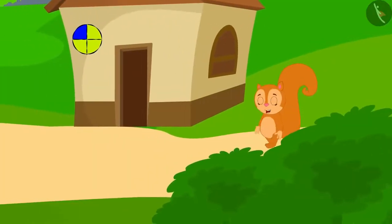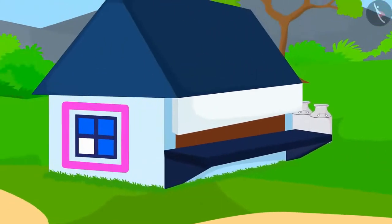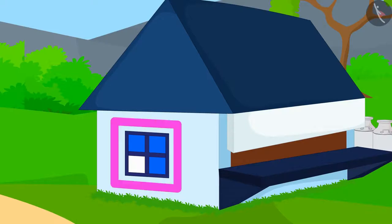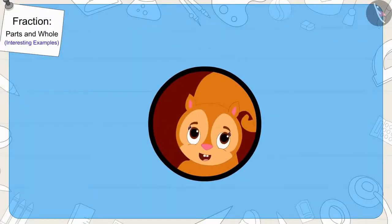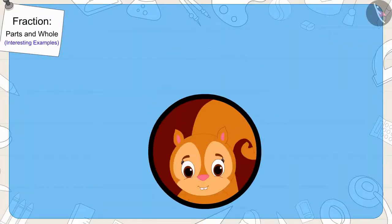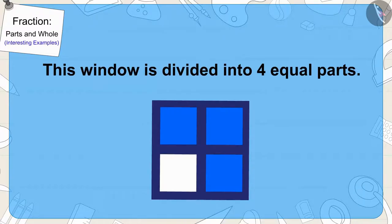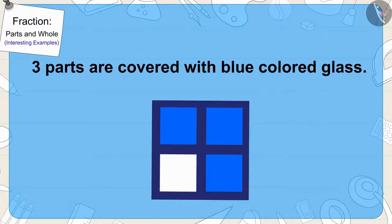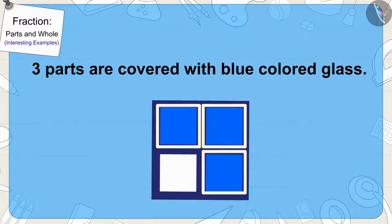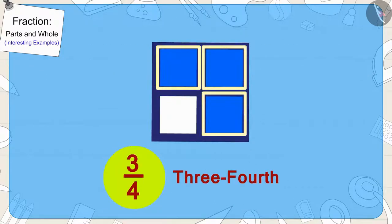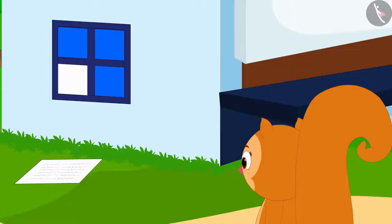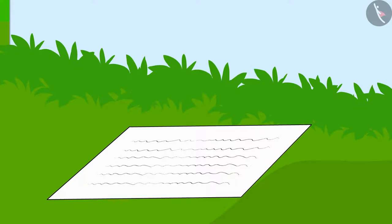Now, Chanda started looking for that window. She finally saw such a window. Are three-fourths of the glass in this window blue? You can stop the video to find the answer. Yes, your answer is absolutely correct. This window is divided into four equal parts out of which three parts are covered with blue-colored glass. In this way, three-fourths of the window has blue glass. Chanda found her next clue under this window.